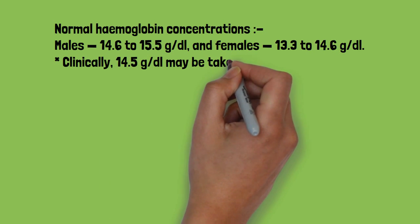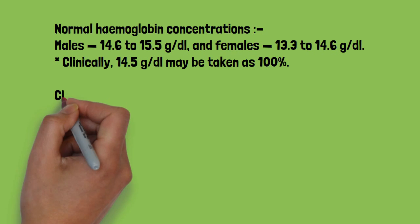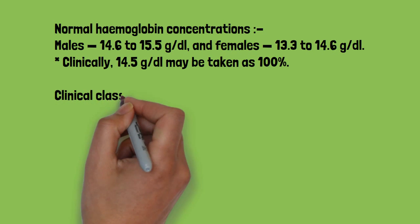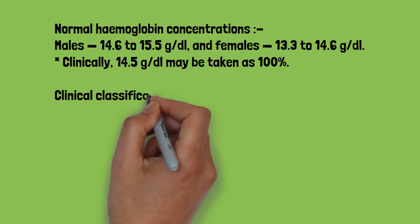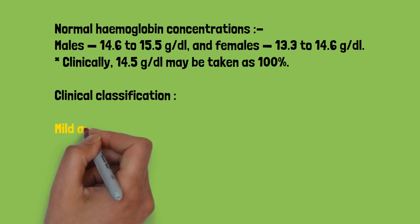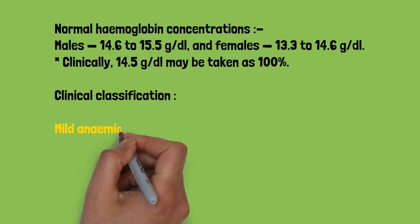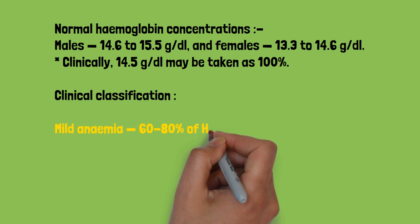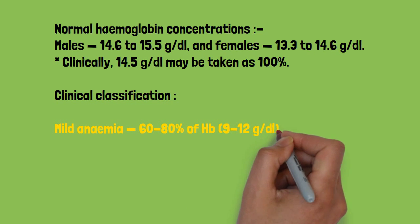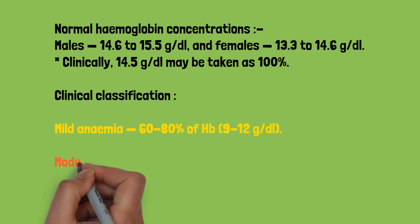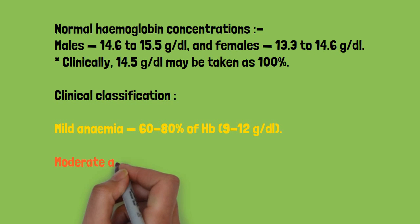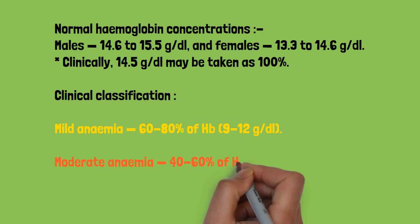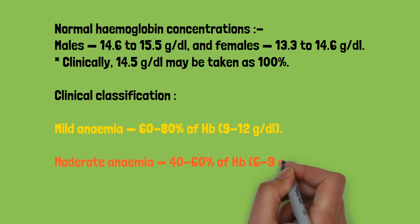Now for clinical classification, we will classify anemia as mild anemia, which is 9 to 12 gram per dl; moderate anemia, which is 6 to 9 gram per dl; and severe anemia, which is below 6 gram per dl. In Harrison, values are a little different — moderate anemia is around 10 to 13 gram per dl and severe anemia is 7 to 8 gram per dl or below.